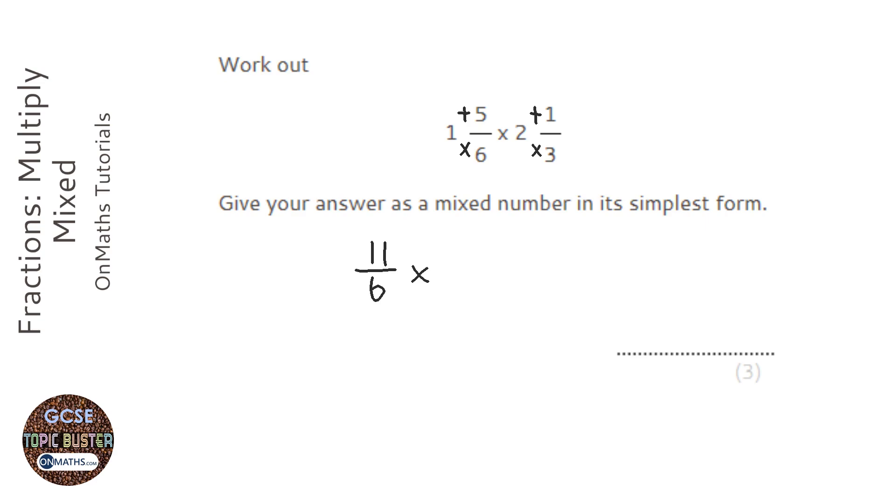And 2 times 3 is 6, add to the top is 7. And then we do as we do normally. We times the tops, that would make that 77. And we times the bottoms, so that would be 18.